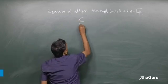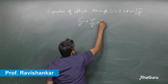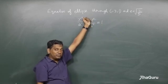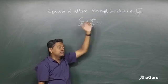Let us assume that the equation of the ellipse is x squared by a squared plus y squared by b squared equals 1. We can do this because it is given that the axis of the ellipse, the major and minor axis, are the same as the axis of the coordinate system.